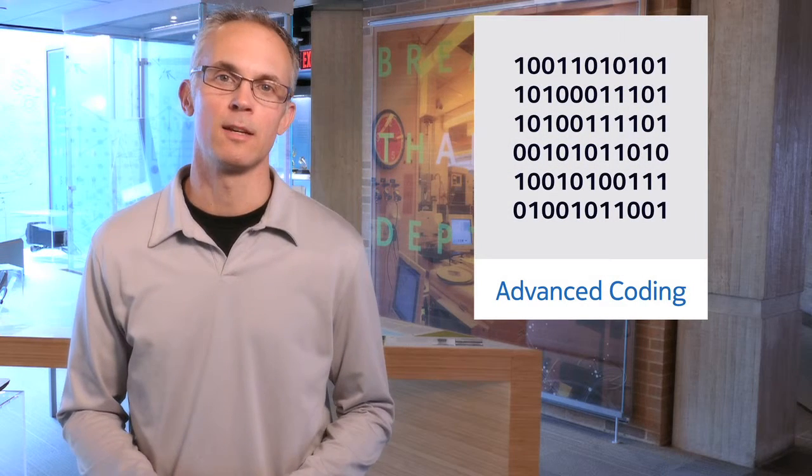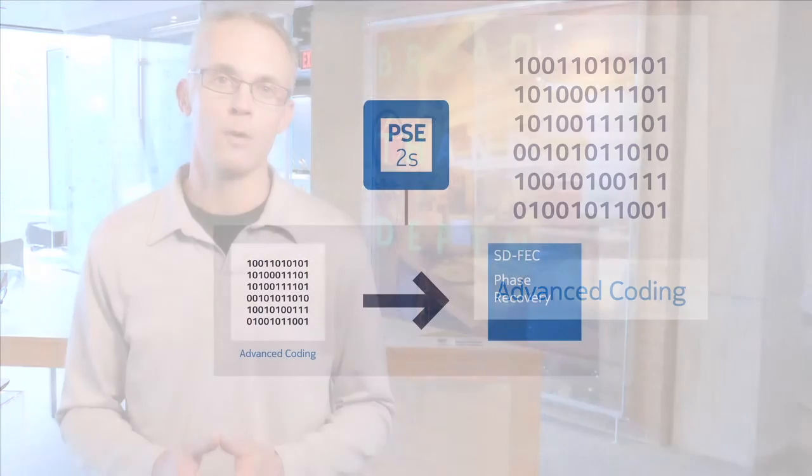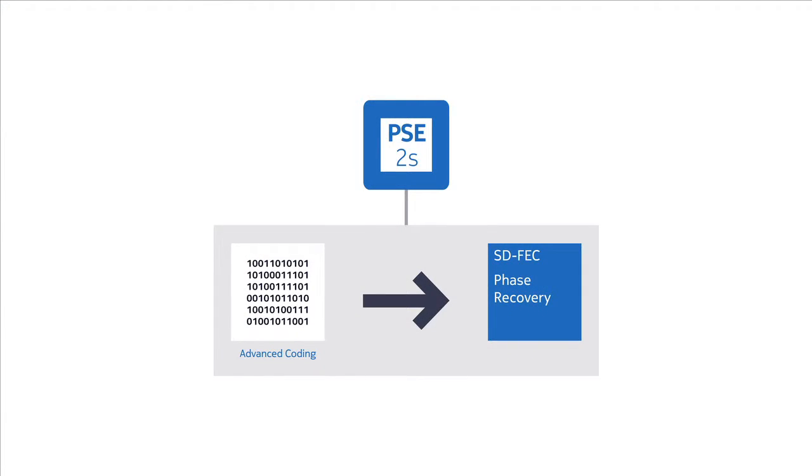The third supercoherent technique is advanced coding. Coding involves the digital manipulation of the bit stream and the application of sophisticated algorithms in order to increase the performance of a DWDM wavelength. For the PSE2, this includes a second generation soft decision forward error correction with 25% overhead that provides more coding gain than previous generations.